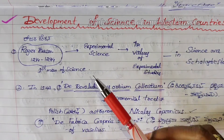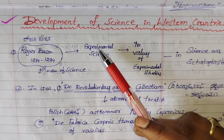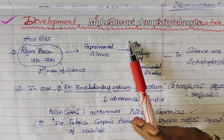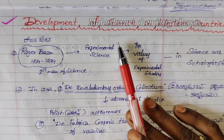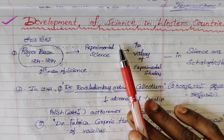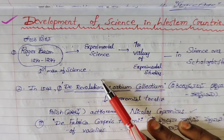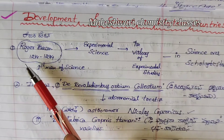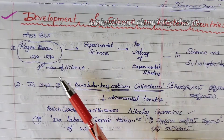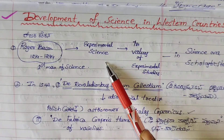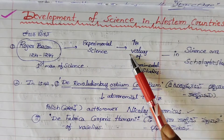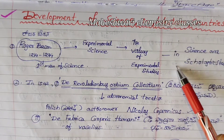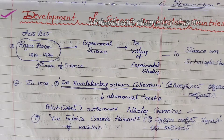My first topic is development of science in Western countries. We will talk about science development in Western countries. The first point is Roger Bacon — he developed the values of experimental studies and science over scholastic studies.